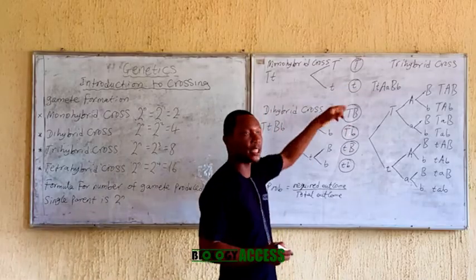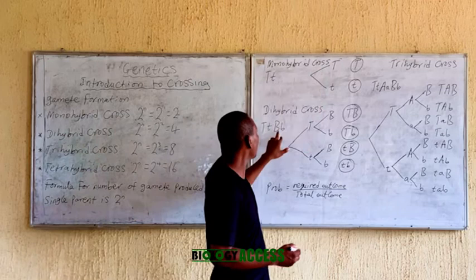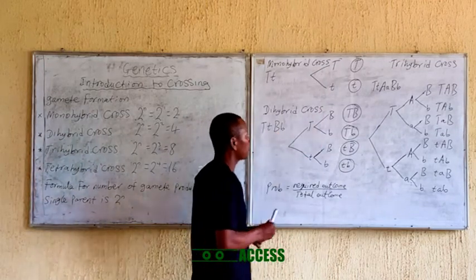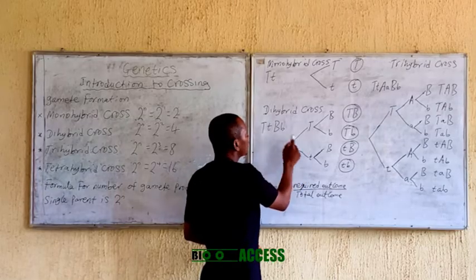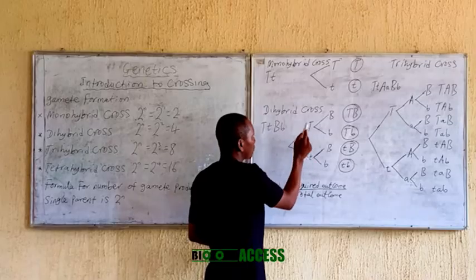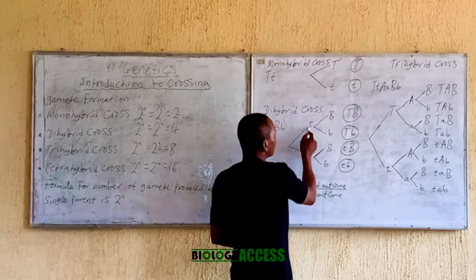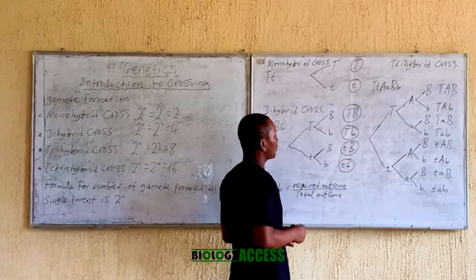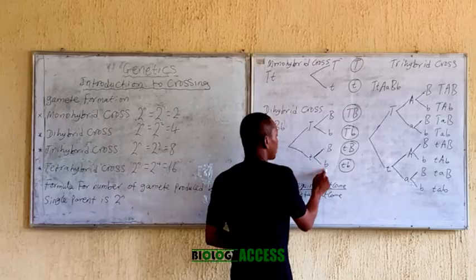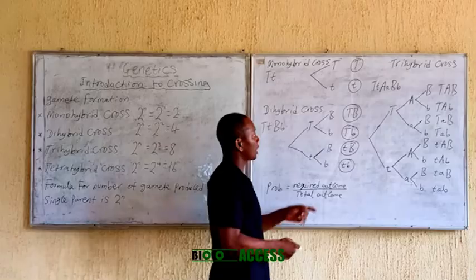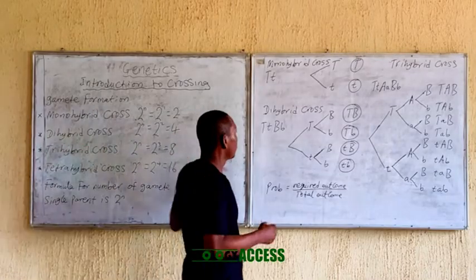For dihybrid cross, you pick the first pair and separate them. Then the second pair has to be attached to each of the first pair gametes. Capital letter T and small letter T are the first pair. Then the second pair is attached to each of these. You pick one from each branch: capital T with capital B is the first gamete, capital T with small b is the second gamete, small t with capital B is the third gamete. The number of gametes is four, which corresponds with 2 raised to the power 2.